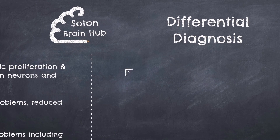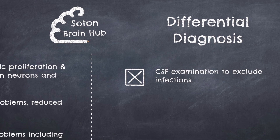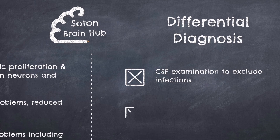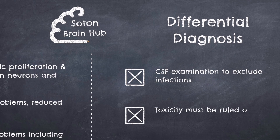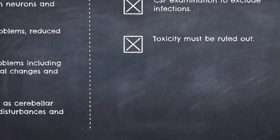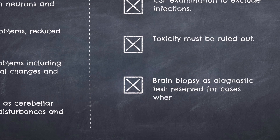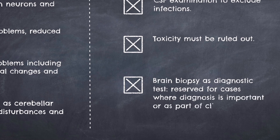In a patient presenting with these symptoms, it would be important to examine the cerebrospinal fluid to rule out infection as the cause. You must also rule out toxicity, for example with drugs or alcohol. The definitive diagnosis for CJD is with a brain biopsy, however this is usually done post-mortem.